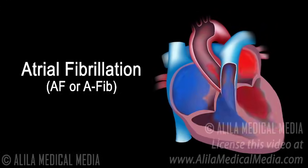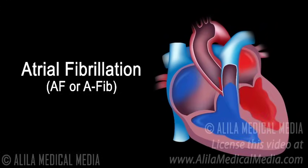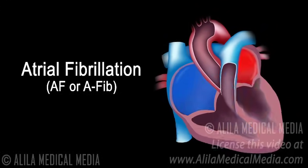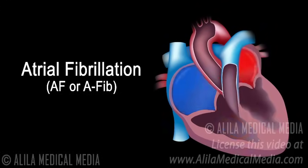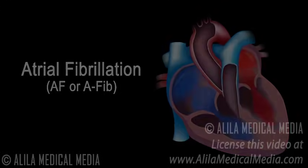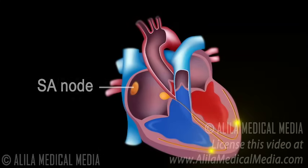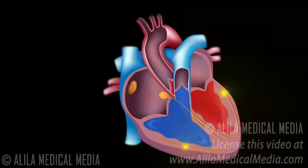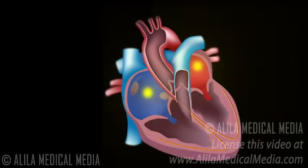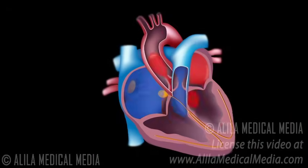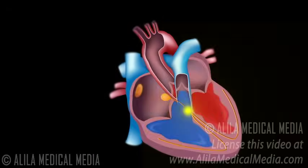Atrial fibrillation is the most common type of cardiac arrhythmia. In a healthy heart, the sinoatrial node, or SA node, initiates all electrical impulses in the atria.